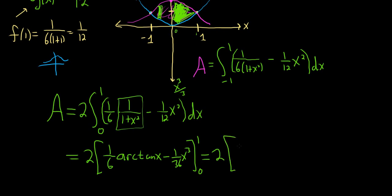So this is 2 bracket. So first we plug in the 1. So 1 6th. Arctangent of 1 minus 1 over 36. And then minus. And then when you plug in 0, you get arctangent of 0, which is 0. And then 0 cubed, which is 0. So all of this is gone.